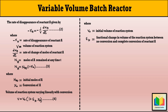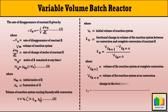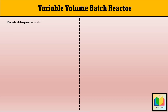According to the definition, the formula for εA is: εA = [V(XA=1) − V(XA=0)] / V(XA=0), where V(XA=1) is the volume at complete conversion and V(XA=0) is the volume at no conversion. Therefore, εA is also defined as the change in the total number of moles of the reaction system when the reaction is completed, divided by the total number of moles fed to the reactor. After substituting the values of NA and V into the rate of disappearance equation, we get: −rA = −[1 / (V0 × (1 + εA·XA))] × d/dt [NA0 × (1 − XA)].